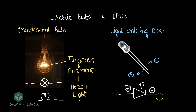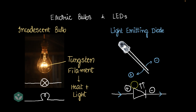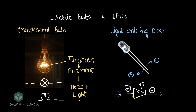What happens if you connect it the other way? The positive side is connected to the positive end of the battery, and the negative side to the negative end of the battery, meaning current should flow only in one direction. If you forced current to flow in the opposite direction — connecting the positive end of the LED to the negative terminal of the battery and vice versa — the LED would stop functioning, would most probably blow up, and would get spoiled. Always ensure that you connect the positive end of the LED to the positive end of the battery, and the same with the negative end.